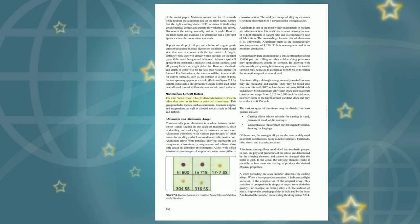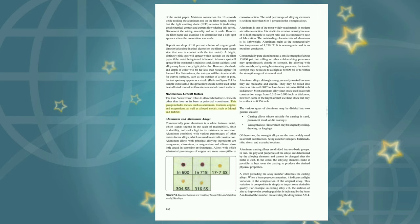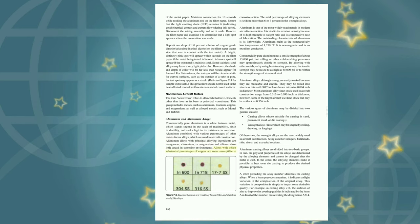Non-ferrous aircraft metals: The term non-ferrous refers to all metals that have elements other than iron as their base or principal constituent. This group includes metals such as aluminum, titanium, copper, and magnesium, as well as alloyed metals such as Monel and Babbitt. Commercially pure aluminum is a white lustrous metal that stands second in the scale of malleability, sixth in ductility, and ranks high in its resistance to corrosion. Aluminum combined with various percentages of other metals forms alloys used in aircraft construction. Aluminum alloys with principal alloying ingredients of manganese, chromium, or magnesium and silicon show little attack in corrosive environments, while alloys with substantial percentages of copper are more susceptible to corrosive action.